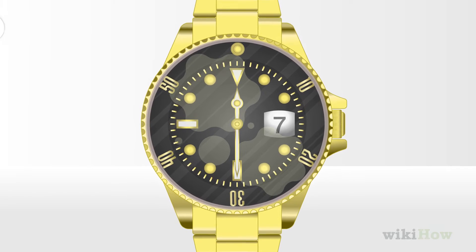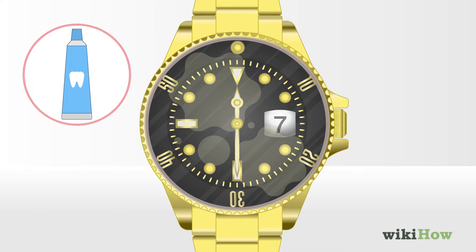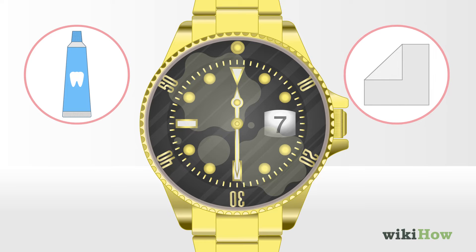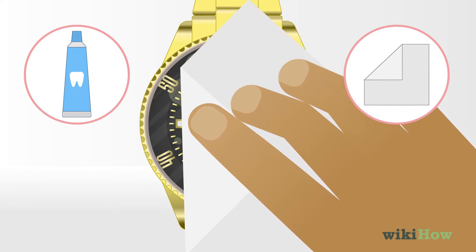To clean a gold-plated watch, put a dab of toothpaste on a soft cleaning cloth and use it to gently buff away stains and grime.